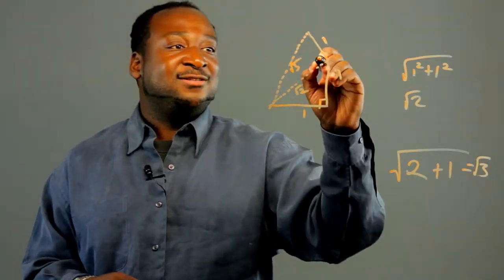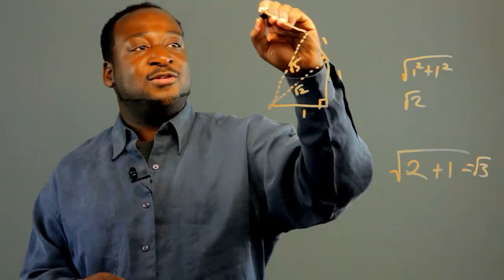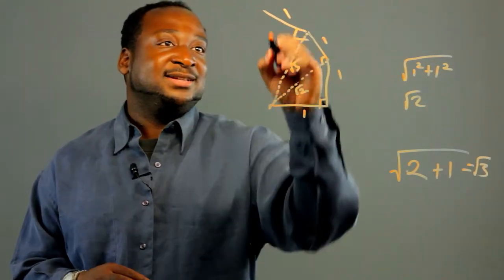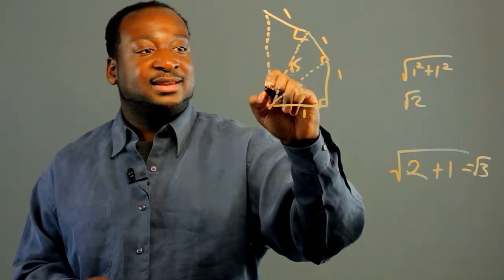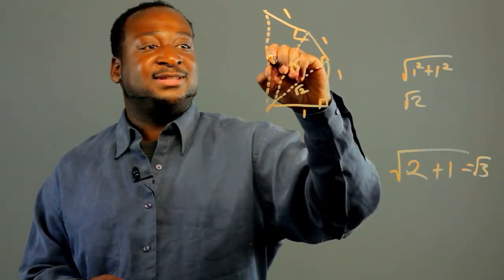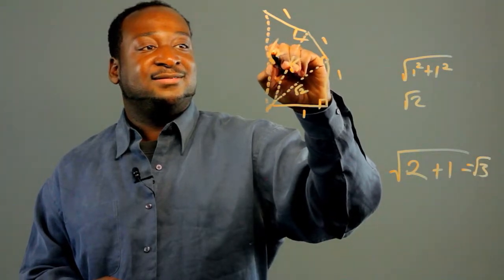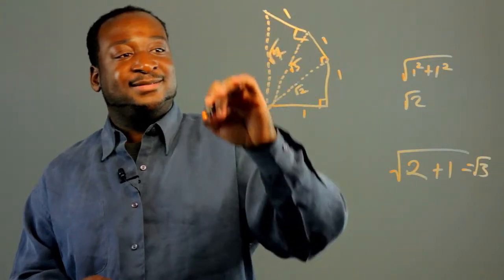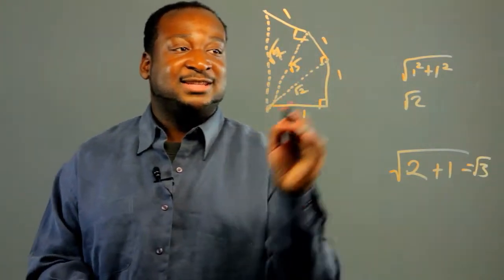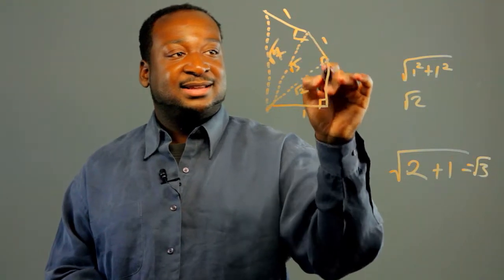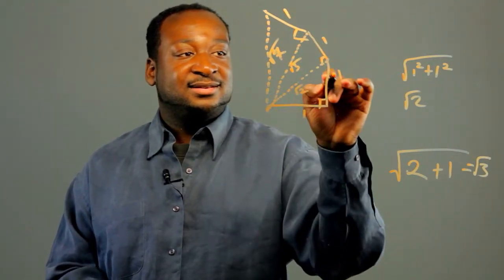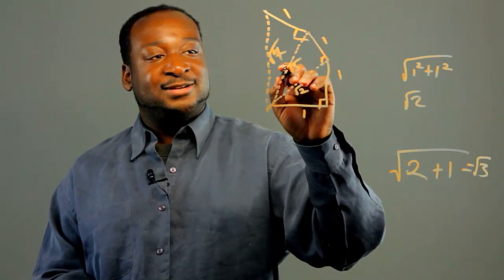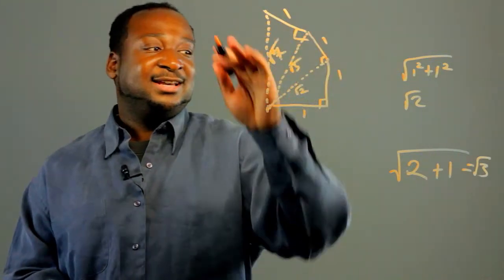And then you just keep on going. You keep on adding more and more triangles with the length of 1. And you're going to keep noticing a pattern through the 4 here. And it keeps going around and around. You just add 1 to the original and you're going to get the root of 2, the root of 3, the root of 4, and then the root of 5, and so on.